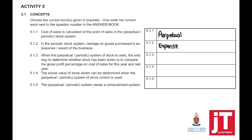5.1.3: when the periodic system of stock is used, the only way to determine whether stock has been stolen is to compare the gross profit percentage on cost of sales for this year and last year. 5.1.4: the actual value of stock stolen can be determined when the perpetual stock system control is used.